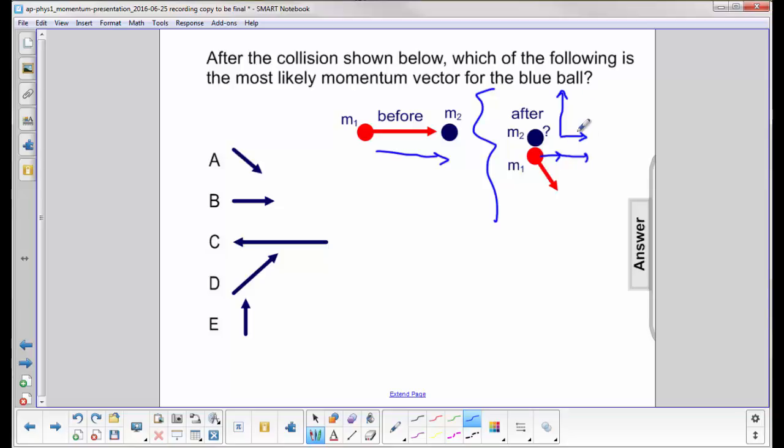So these are the components of the momentum vector for M2. When I add them together, I slide this guy over to here. So let me draw a little dotted line here. Put an arrow. Connect it up. The momentum of M2 will be off in the northeasterly direction. So the answer is D.